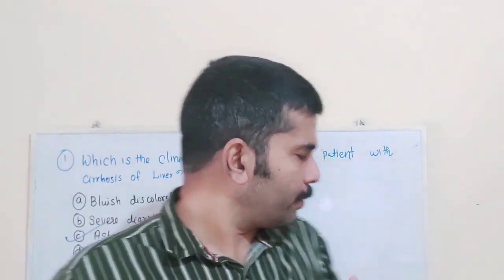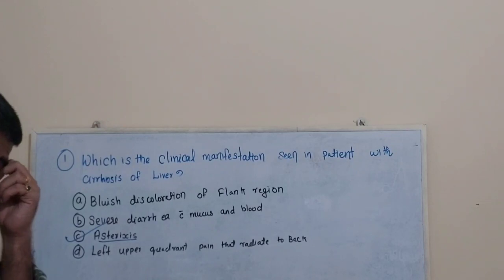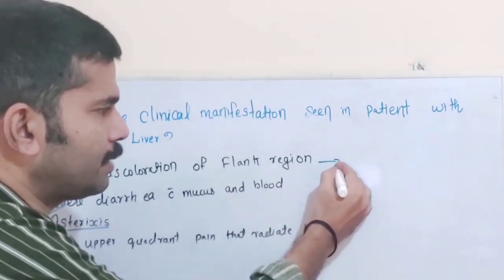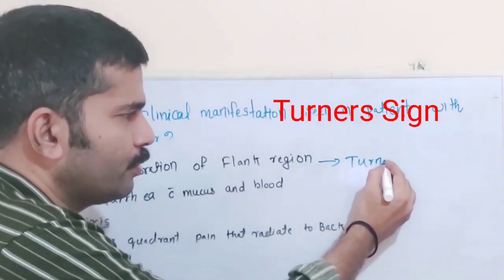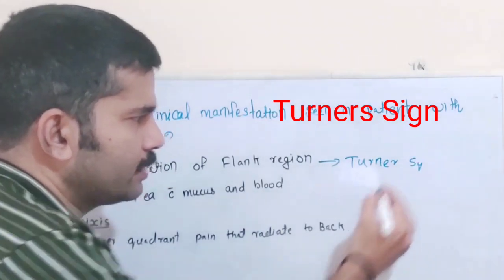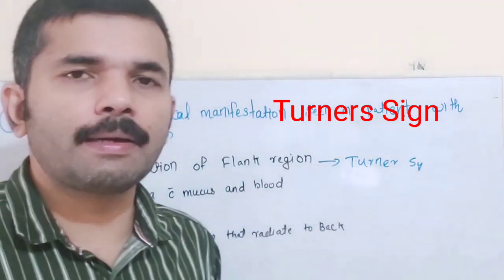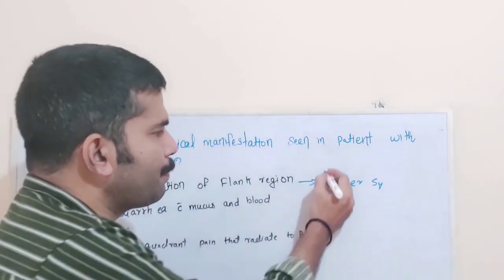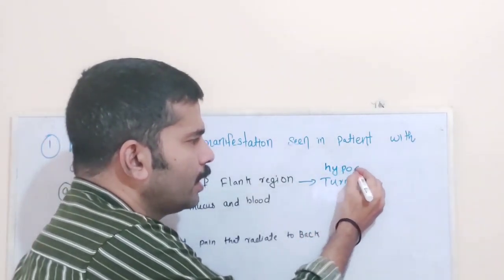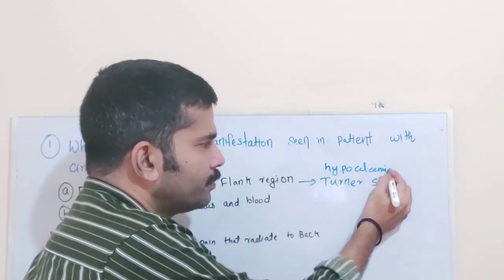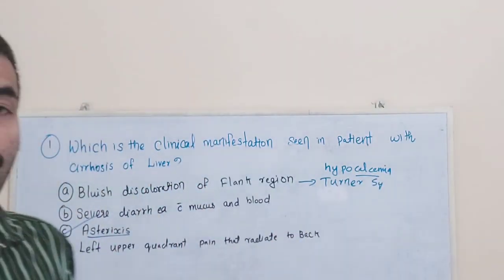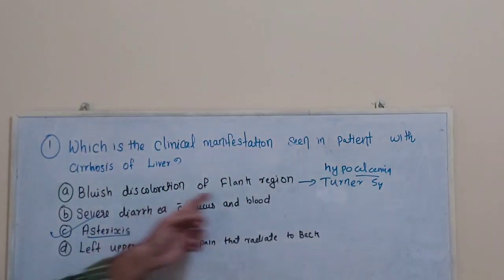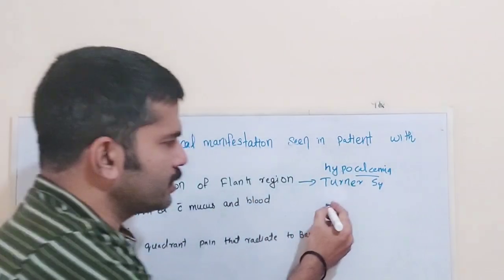So, a fruity odor of breath is present. Now, Option A - bluish discoloration of the flank region - this is Grey Turner's syndrome, not cirrhosis. Grey Turner's syndrome is seen in acute pancreatitis, around the flank area, as a bluish discoloration. It is also associated with hypocalcemia, which leads to Turner's syndrome seen in acute pancreatitis.